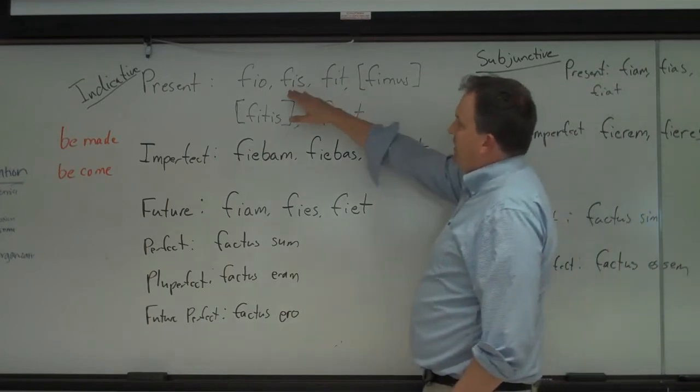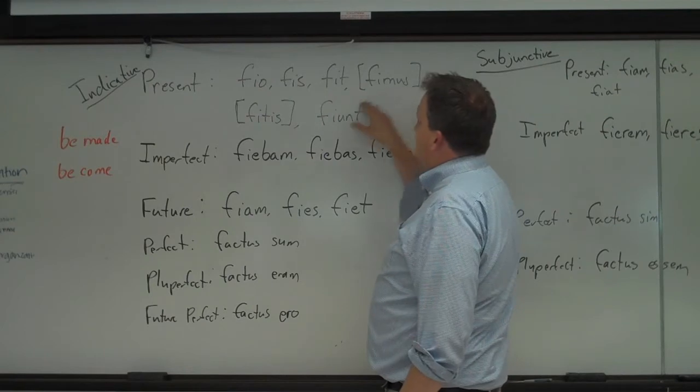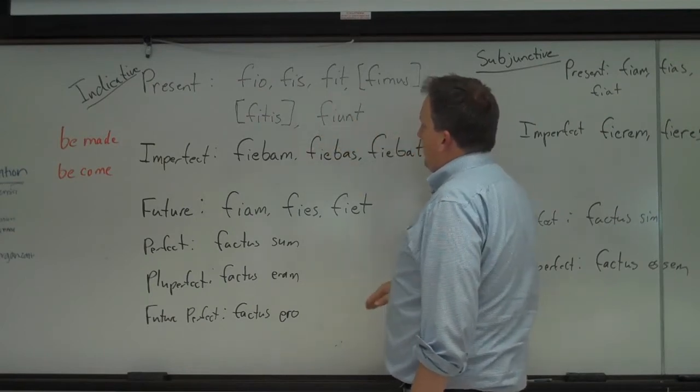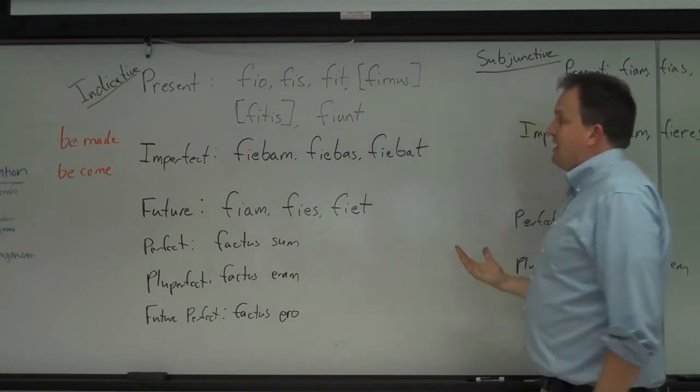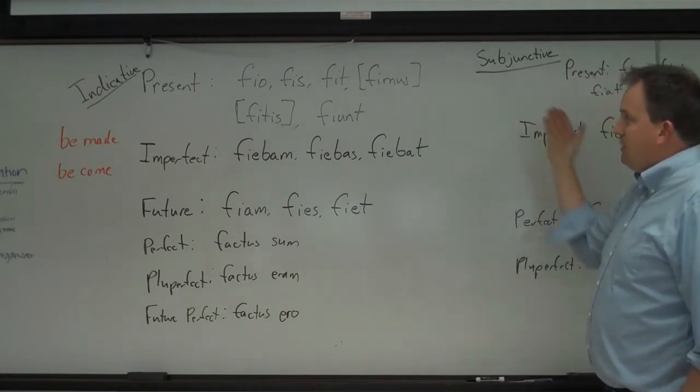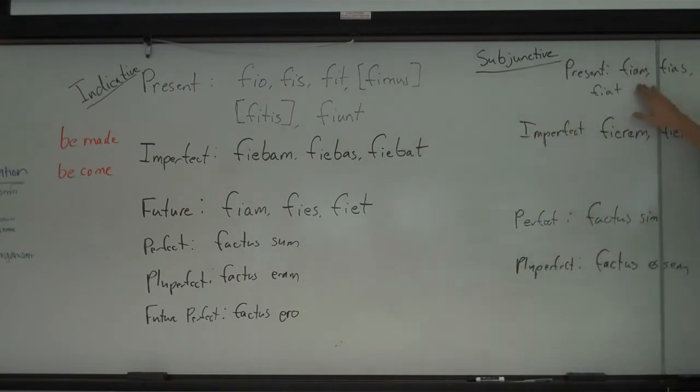So we have fio, and there's some forms that don't exist. Fio, fis, fit. Fimus, fitis, fiunt. And fimus and fitis is not attested to. So I become, you become, he becomes, and then they become. And subjunctive here is fiam, fias, fiat.